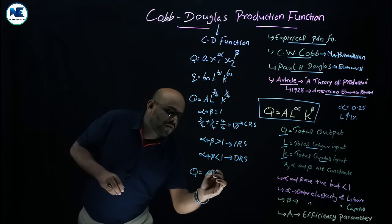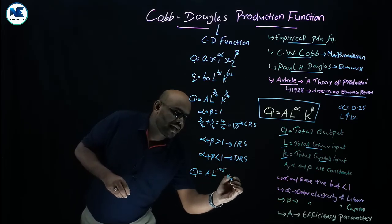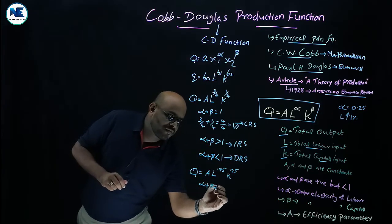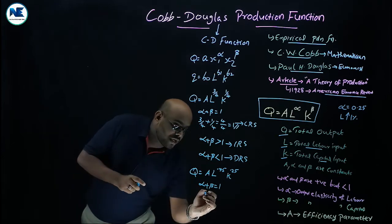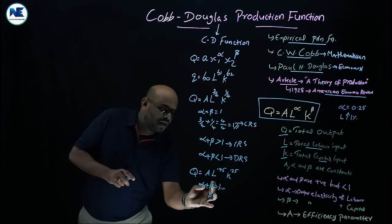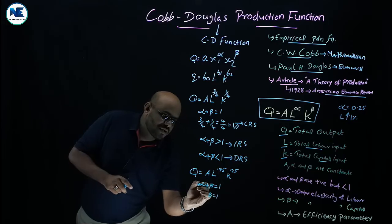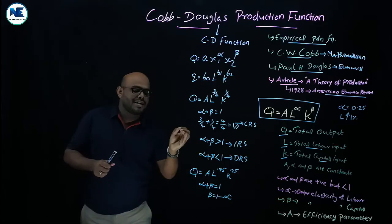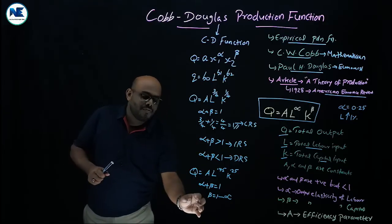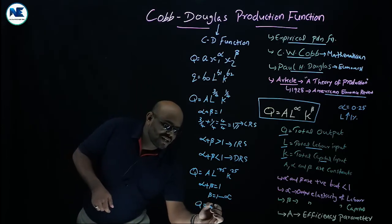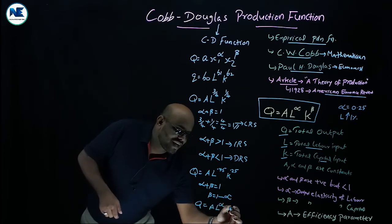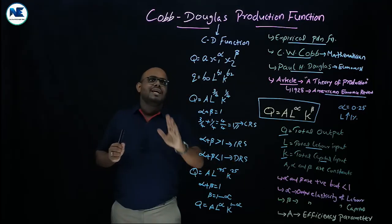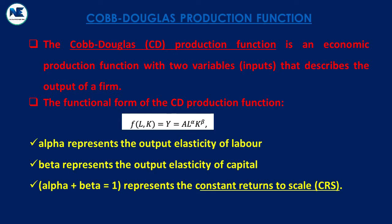We can write the function as Q = A · L^0.75 · K^0.25. Since alpha + beta = 1, we have beta = 1 - alpha. Therefore, the Cobb-Douglas production function under constant returns to scale can also be expressed as Q = A · L^α · K^(1−α). This is the most popular form of the production function, representing a linearly homogeneous production function.